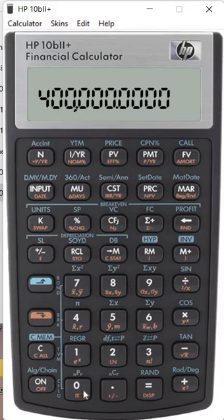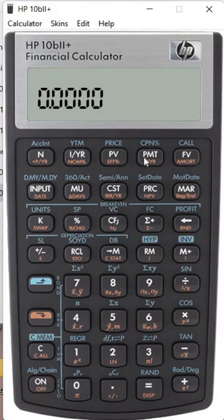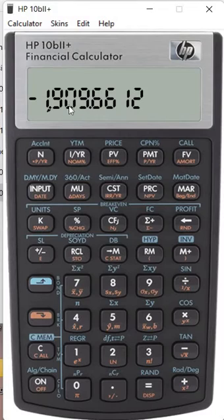So future value is zero - we clear all the loan. Then compute, press the PMT, then monthly installment equals $1,909. It's ending mode, $1,909.